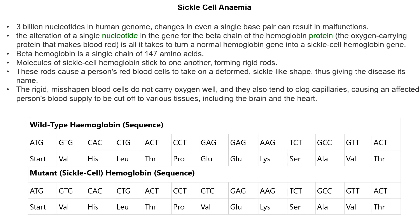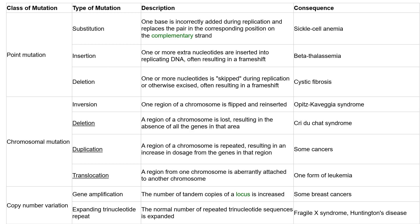Instead of a GAG codon, you get a GTG. That is a single base pair nucleotide substitution, but that one change has resulted in sickle cell anemia. So the GAG has changed to GTG.